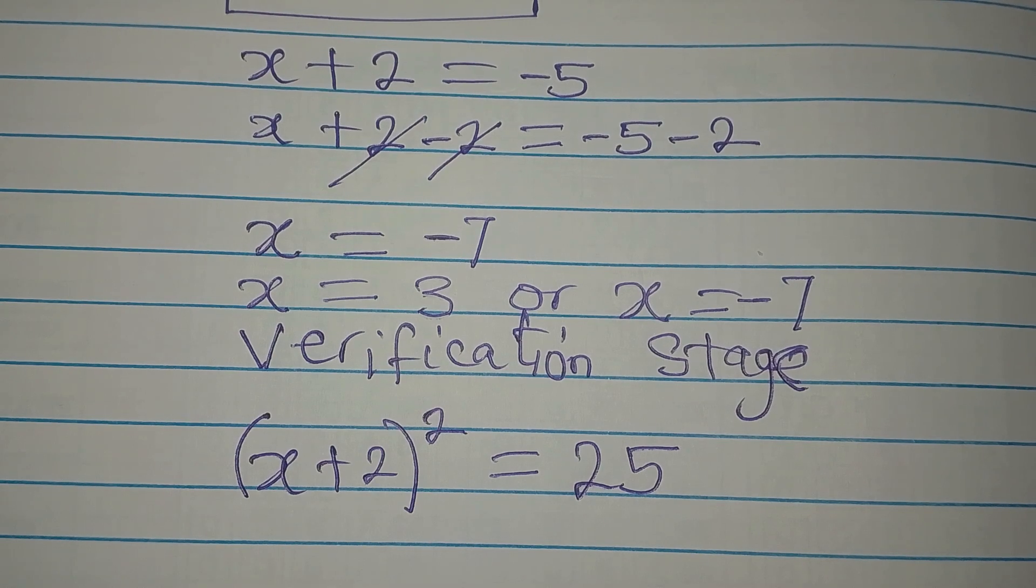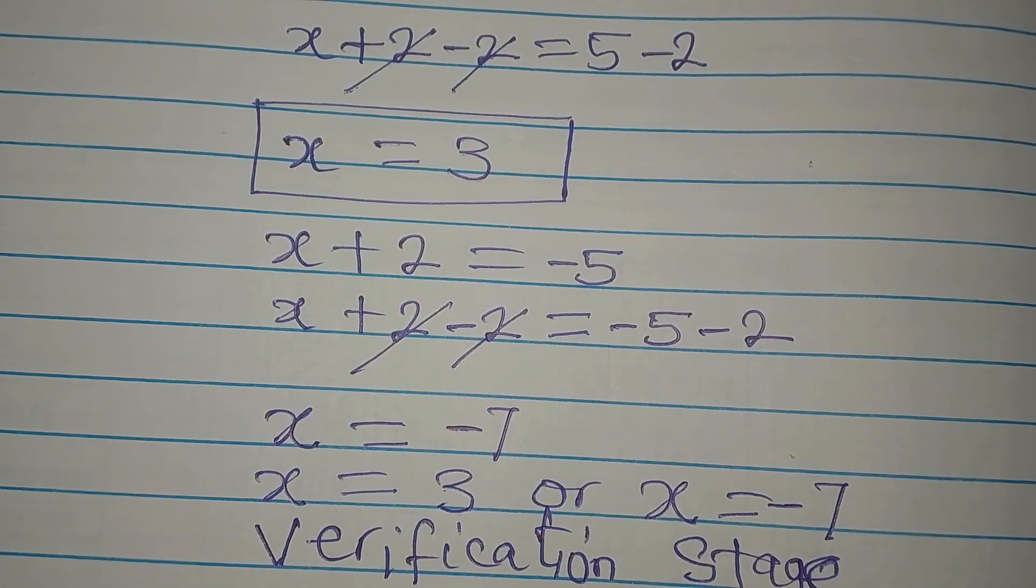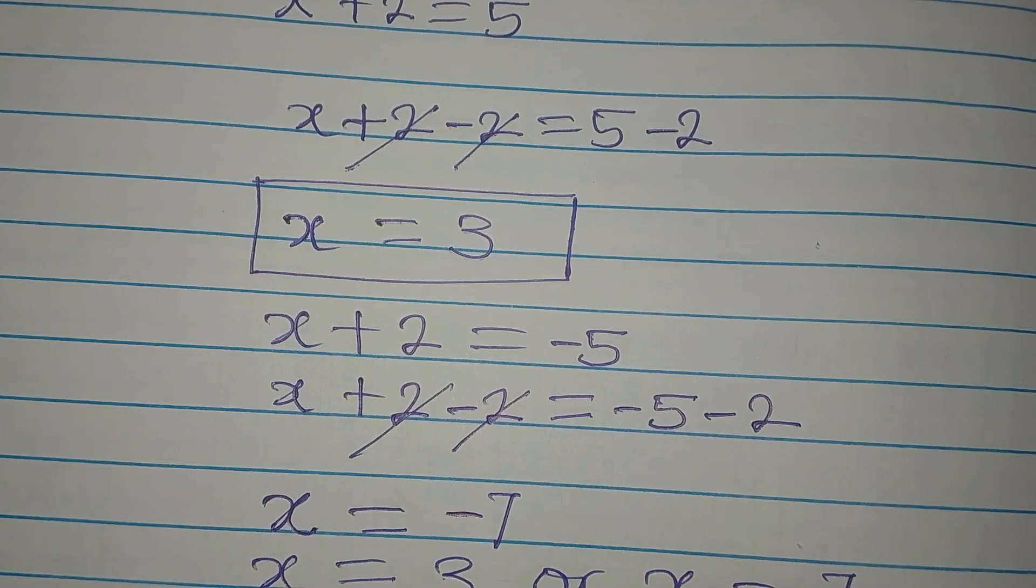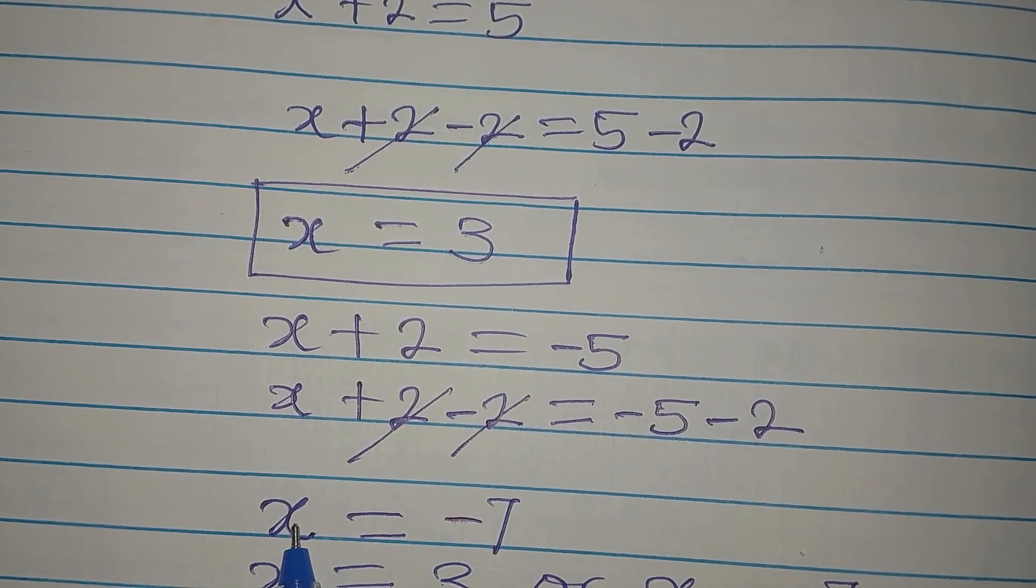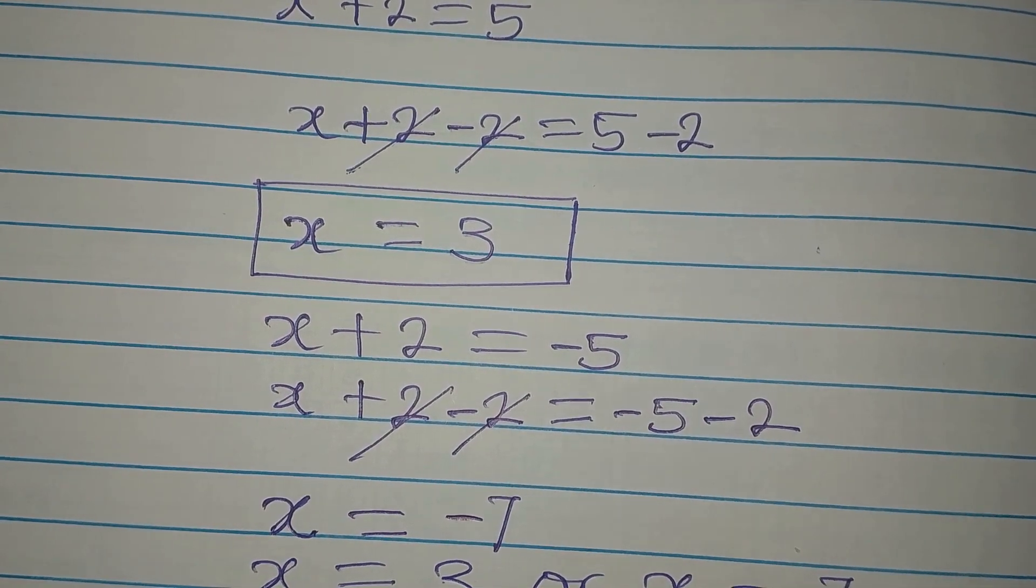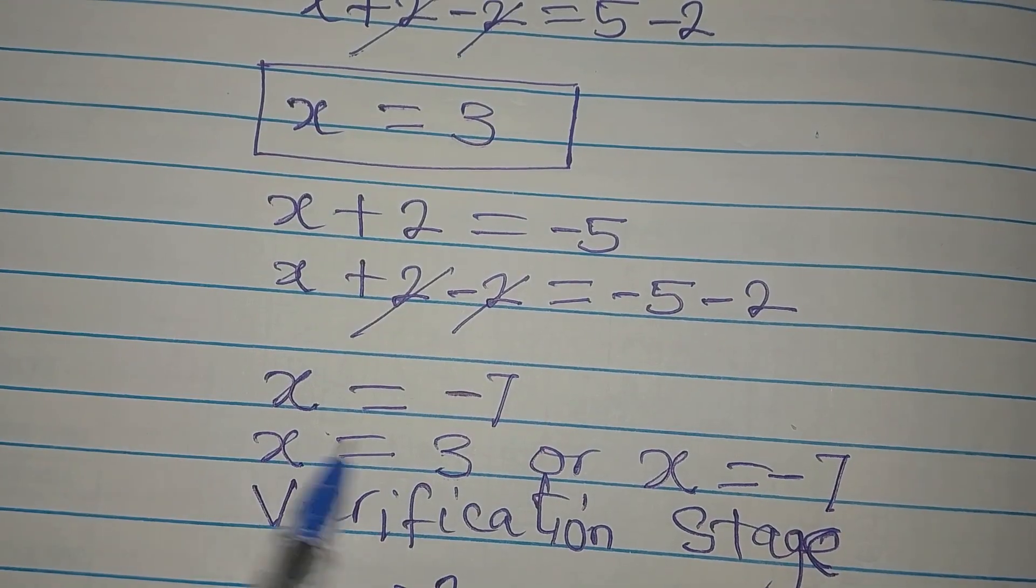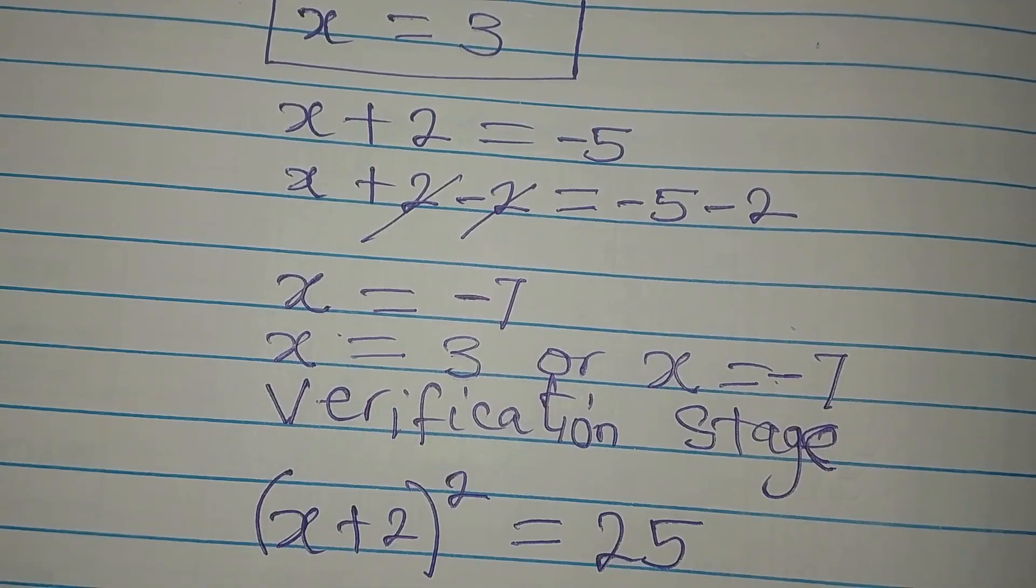Now the first value of x is 3. We also had x to be equal to negative 7. You can see them over here. So now let's put in the value of x which is 3.